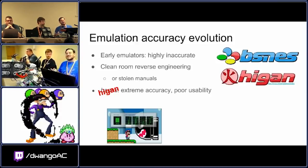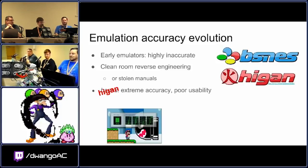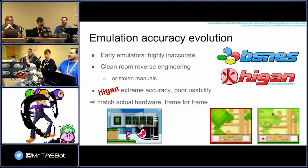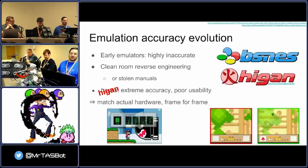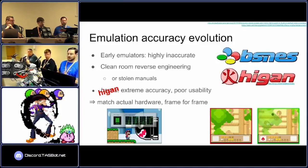Sometimes certain emulators went too far, like bsnes and Higan, and resulted in extremely good accuracy but not necessarily the best usability. But the point is that these were able to match hardware frame by frame. One example you can see is that in early emulators, the transparency of a cloud in Kirby couldn't be seen correctly — it was just an opaque green cloud — while later emulators were able to properly show the transparency.